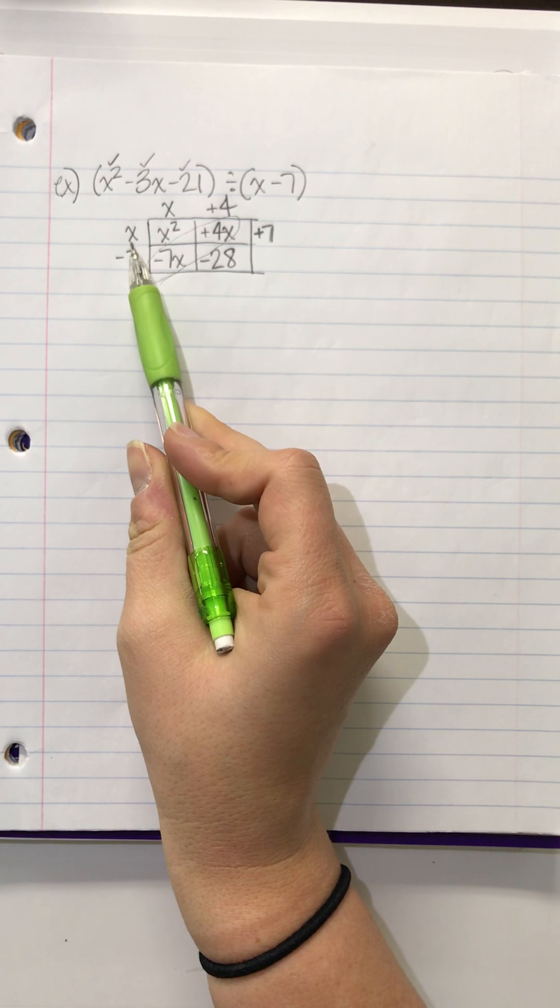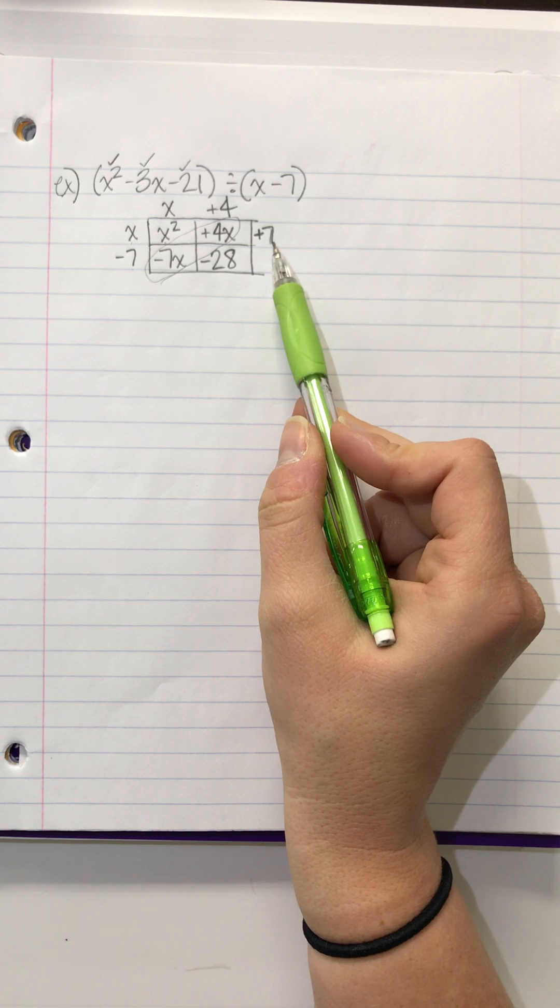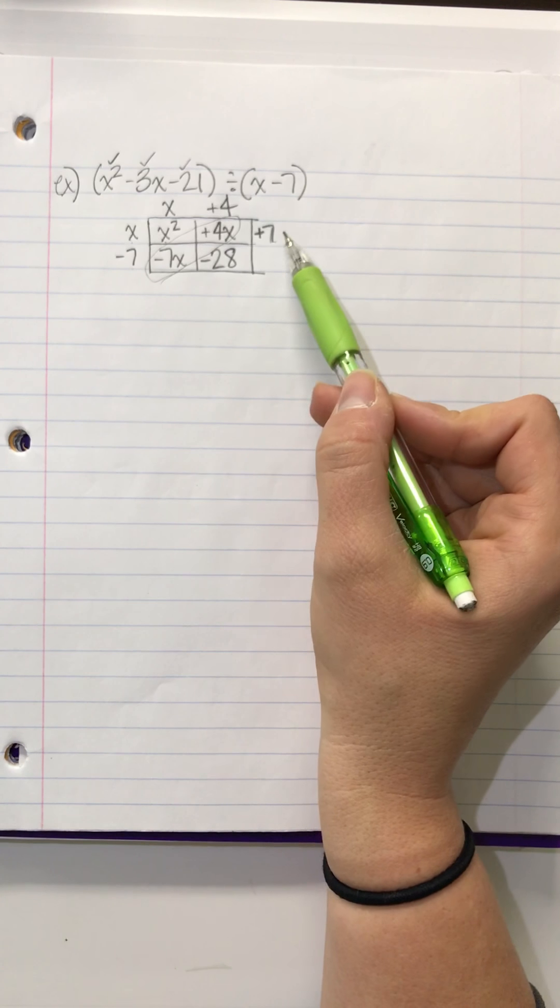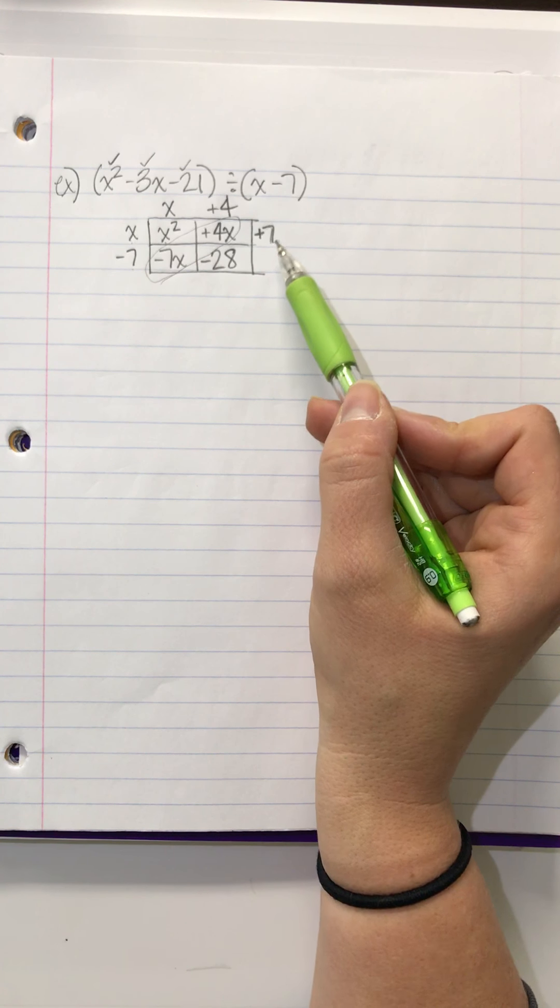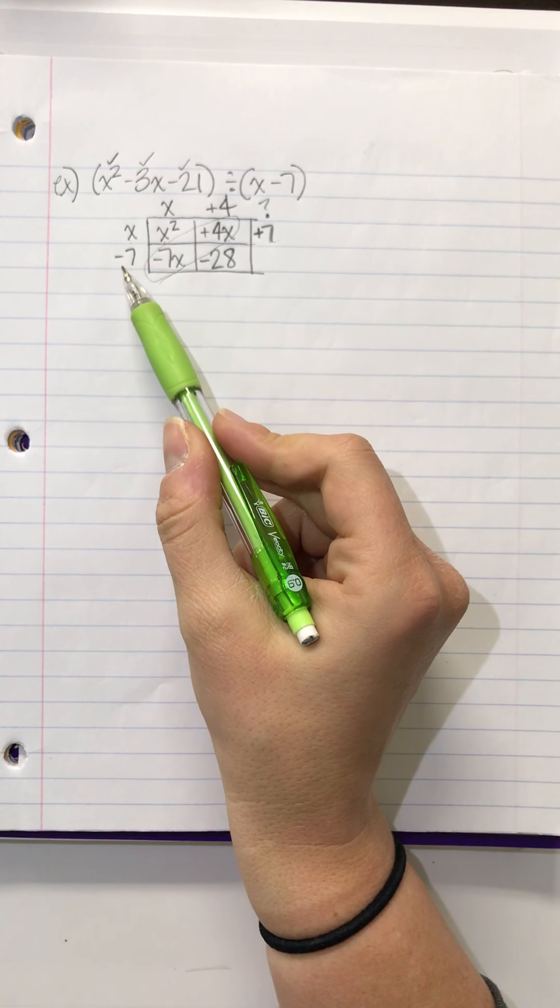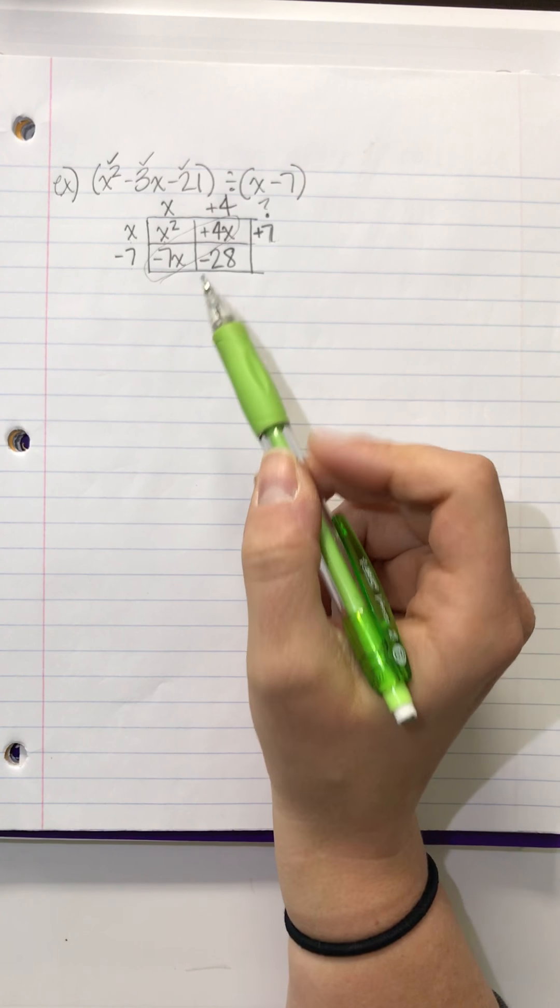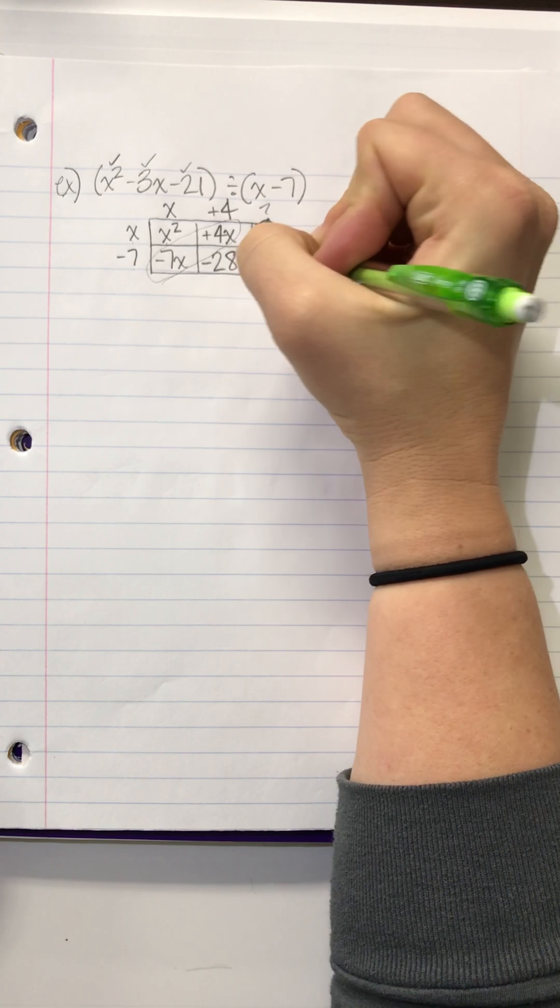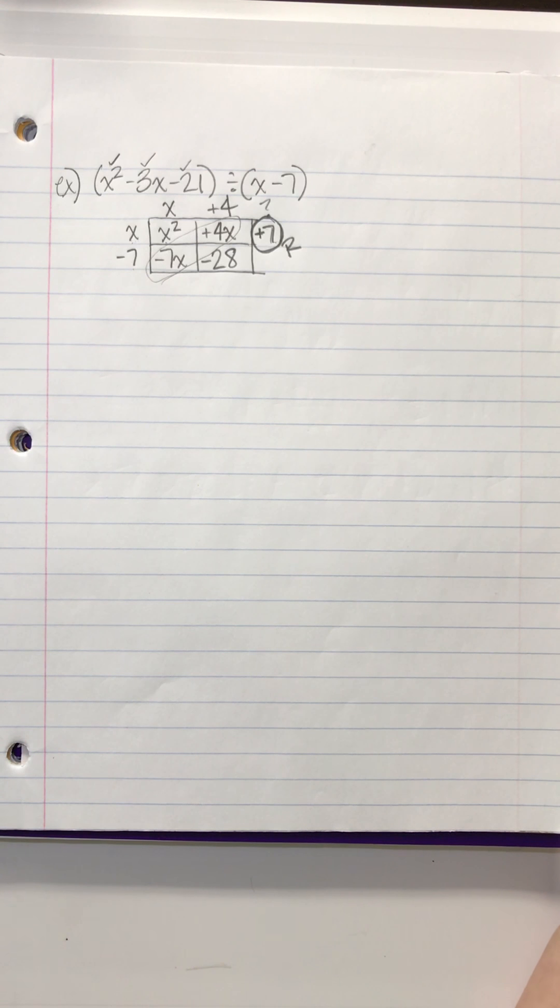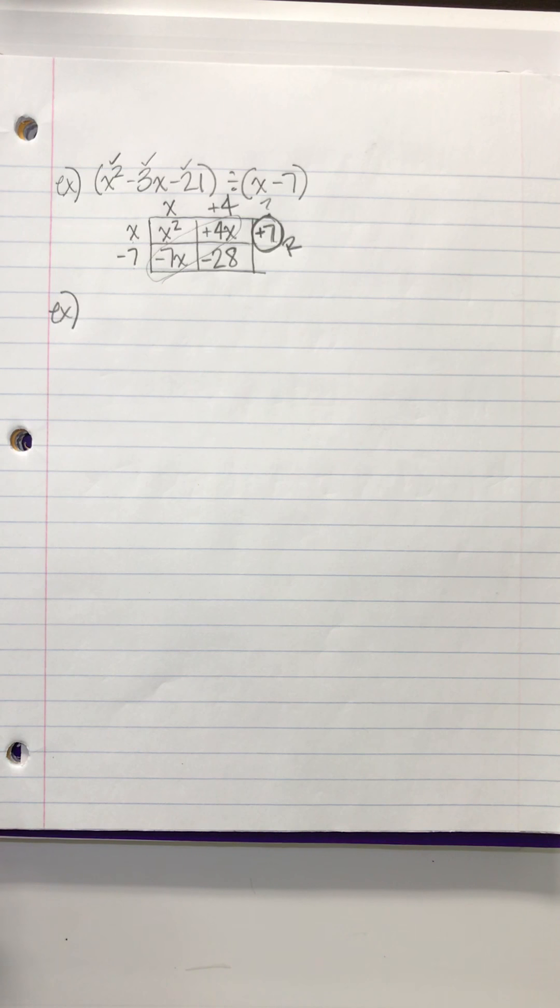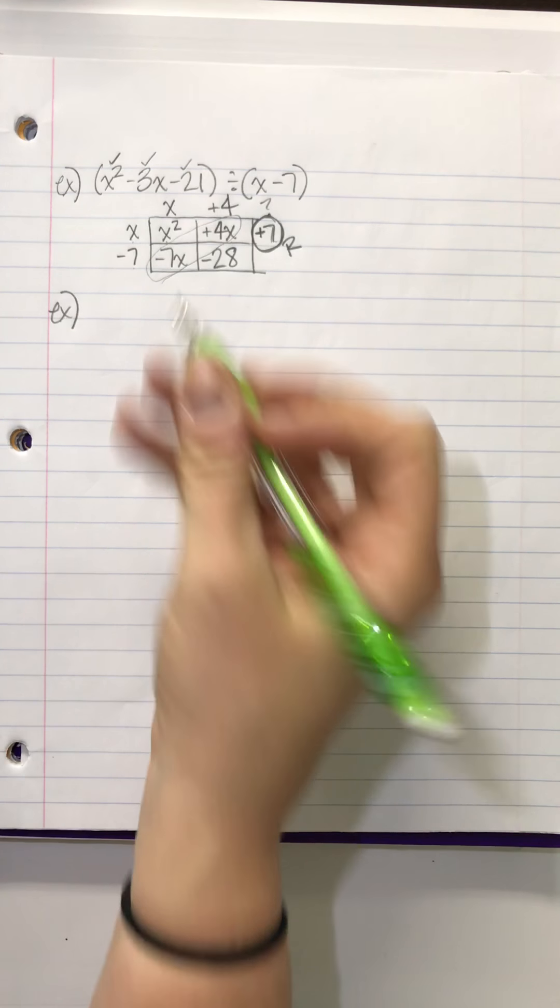What do I multiply x by to turn it into a positive 7? A fraction or something. Yeah. Like, you run into this issue where x times 7 isn't 7. It's 7x. So, when you run into an issue that you're like, there is nothing that will multiply by an x and turn it into a 7, we run into all kinds of issues. So this right here is your remainder.